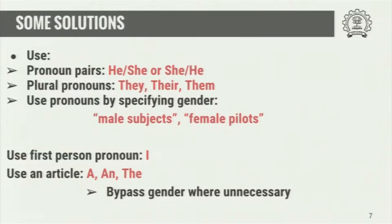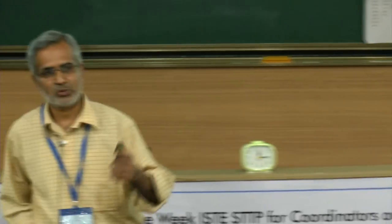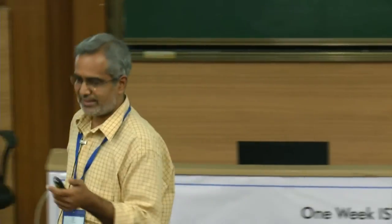When you know the gender, you can specify — for example, 'I am doing research among female pilots' or 'among male subjects.' Or sometimes you can replace the third person with first person or an article. For example, instead of 'the researcher has submitted his CV along with this proposal,' you can say 'I have appended my CV along with this proposal.' There are various ways to avoid these gendered language problems altogether.